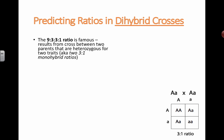So just a quick reminder, the 9 to 3 to 3 to 1 ratio is famous because that's the ratio we get when we cross two parents that are actually heterozygous for both traits. For example, one parent is big A little a big B little b, and the other parent is also big A little a big B little b.